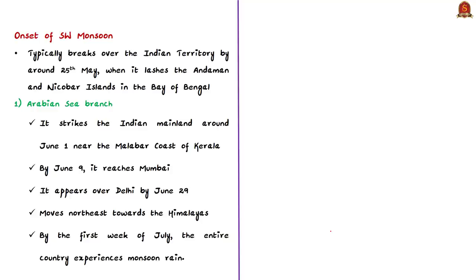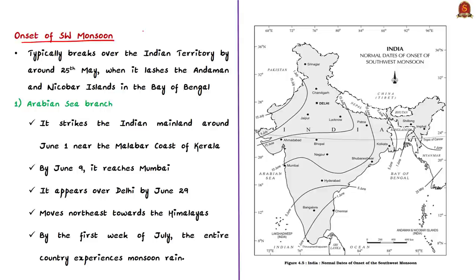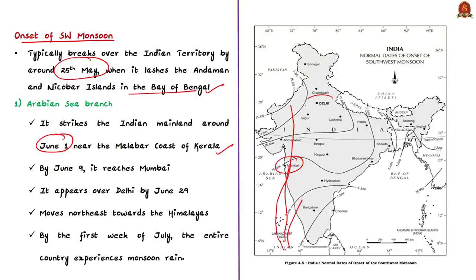The southwest monsoon arrives in two branches: the Arabian Sea branch and the Bay of Bengal branch. The Arabian Sea branch extends toward a low pressure area over the Thar Desert in Rajasthan and is considerably stronger. Monsoon typically arrives over Indian territory by 25th May, striking the Andaman and Nicobar Islands first. It strikes the Indian mainland around June 1st near the Malabar coast of Kerala, reaches Mumbai by June 9th, and appears over Delhi by June 29th. The Bay of Bengal branch initially tracks the Coromandel coast and moves towards the Indo-Gangetic plain. By the first week of July, the entire country experiences monsoon rain.